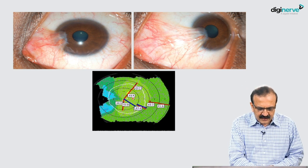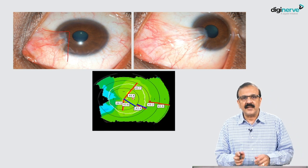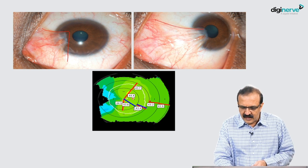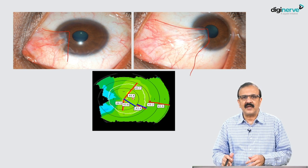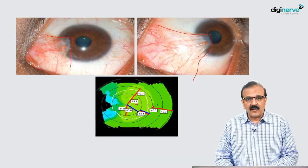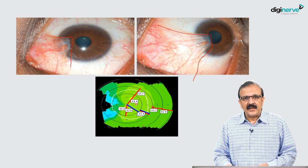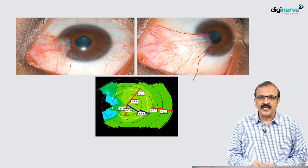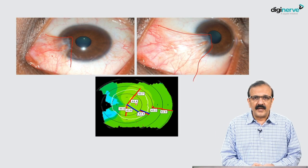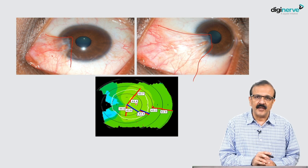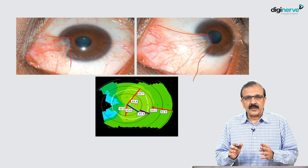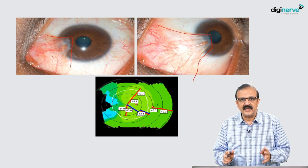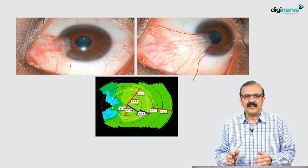This pterygium is far fleshier than the previous one — when the patient moves, you can see how much astigmatism it appears to be creating, as if the pterygium is pulling into the cornea. But looking at the topography, it is all green. So just because a pterygium looks thick, you should not assume it is causing significant astigmatism. When in doubt, assess refractive astigmatism and confirm with topography.